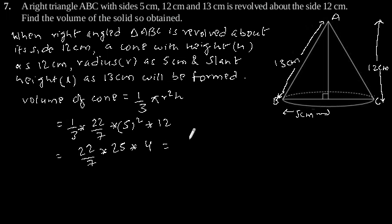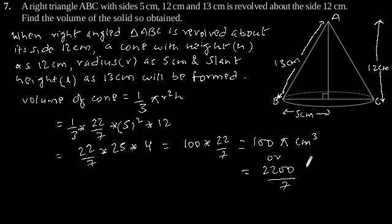Which can also be written as 100 pi cubic centimeter or 2200 by 7 cubic centimeter. Therefore, the volume of cone formed is 100 pi cubic centimeter.